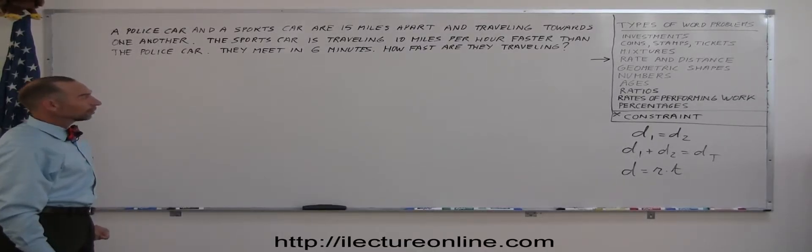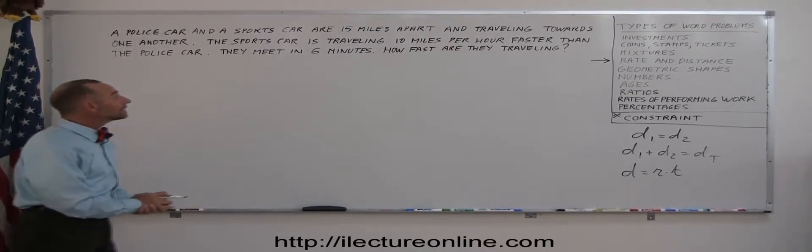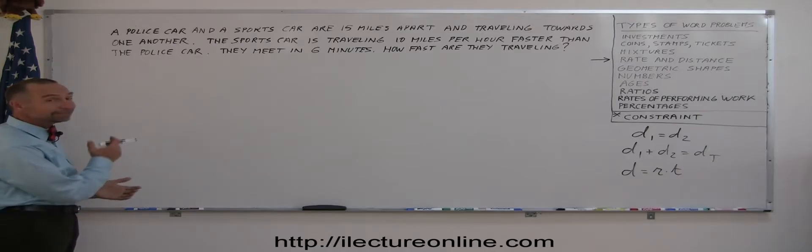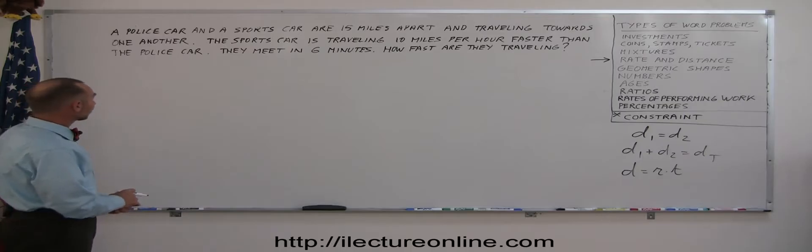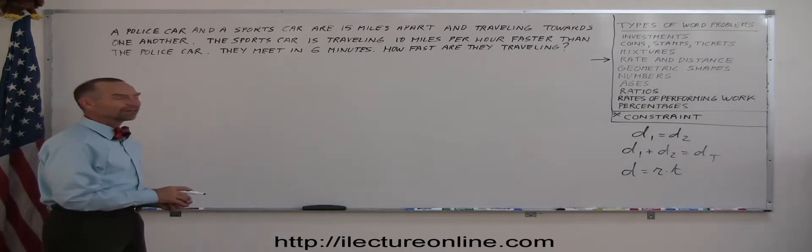All right, here is another example of how we deal with rate and distance problems. Let's read it, get a feel for it. A police car and a sports car are 15 miles apart and traveling towards each other. The sports car is traveling 10 miles per hour faster than the police car and they meet in six minutes. How fast are they traveling?